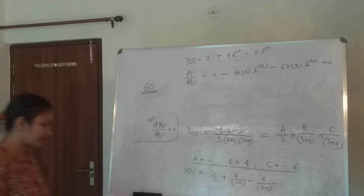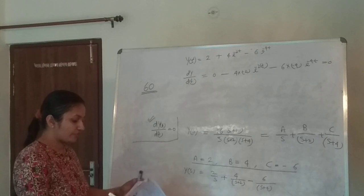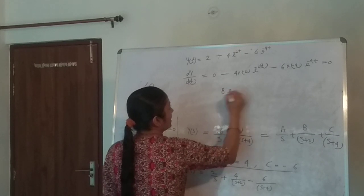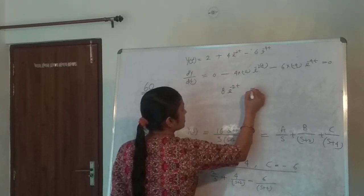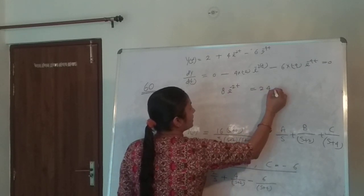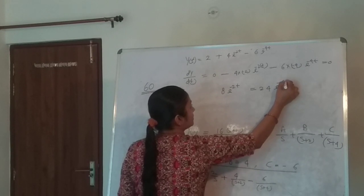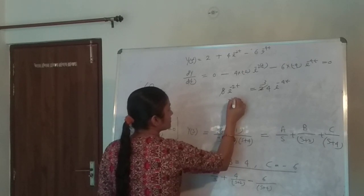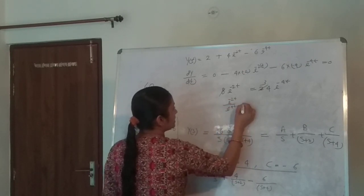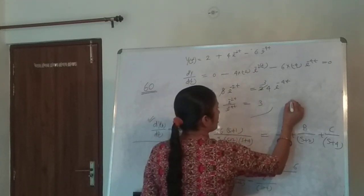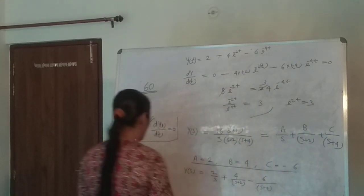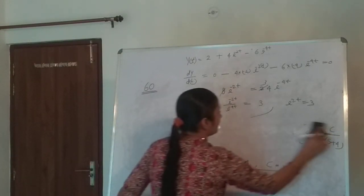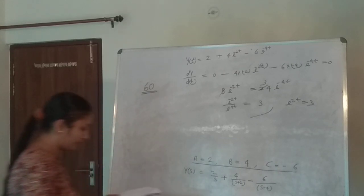In this there is one constant at this time constant. You will get 8e^(-2t) equals 24e^(-4t), which gives 8e^(2t) equals 3. Now it is simple, just take natural log on both sides. Take ln for both sides, you will get the value of t.